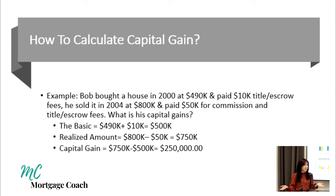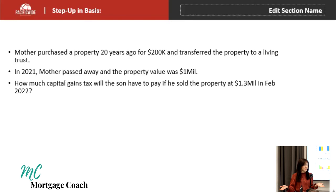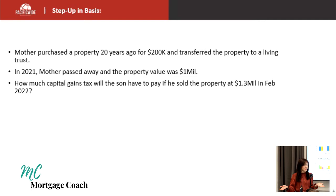Now that we understand basis, let's talk about what step up in basis is. A mother purchased a property 20 years ago for $200,000 — so the basis, including purchase price and buying expenses, is $200,000. While she was alive, she created a living trust that leaves the property to her son after she passed away. In 2021, the mother passed away and the property value at that time was $1,000,000.